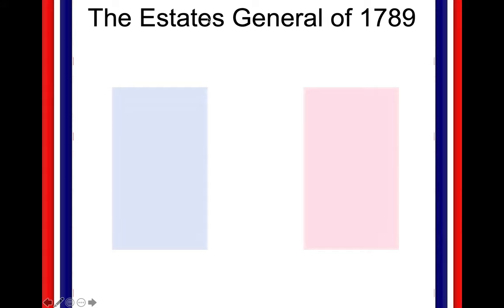The six phases we'll go through throughout this lecture are: Phase 1 — the National Assembly; Phase 2 — the Legislative Assembly; Phase 3 — the Convention, which is the first French Republic; Phase 4 — the Directory; Phase 5 — the Consulate; and Phase 6 — Napoleon's Empire. Today we're focusing on the first phase and the events that go along with it.